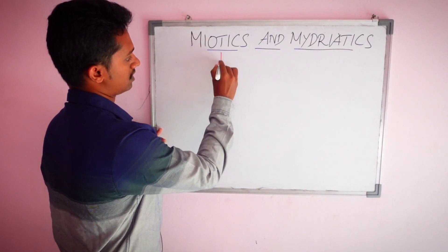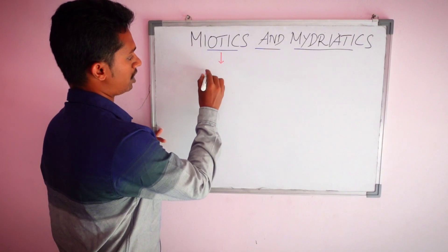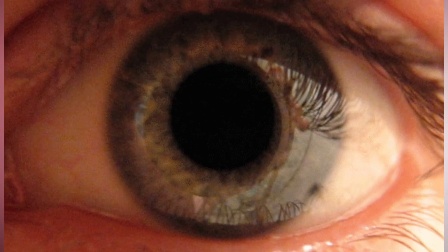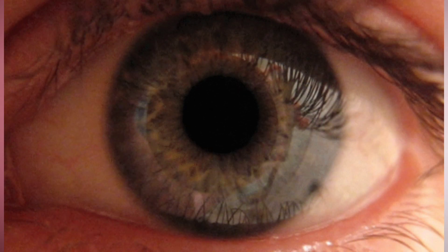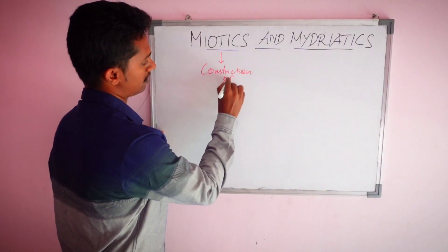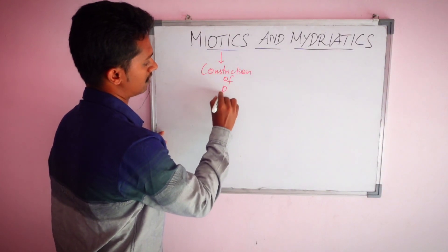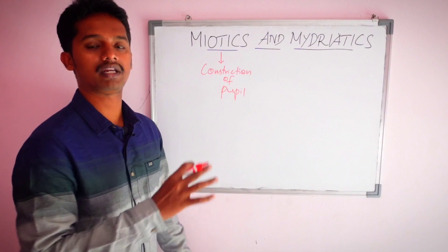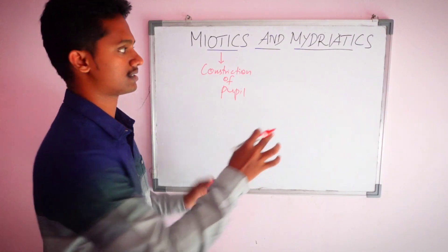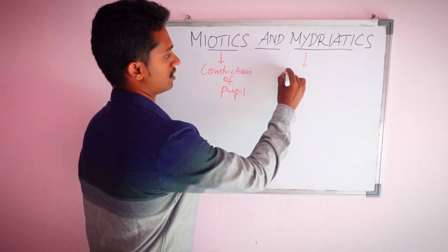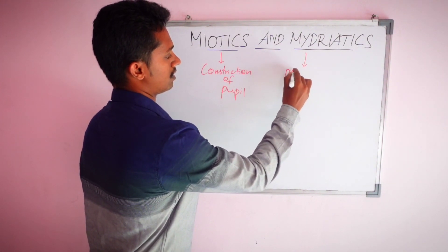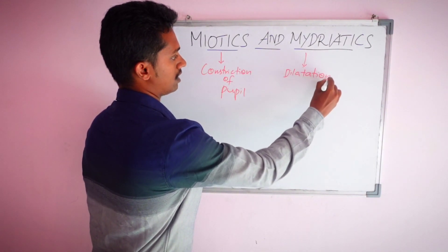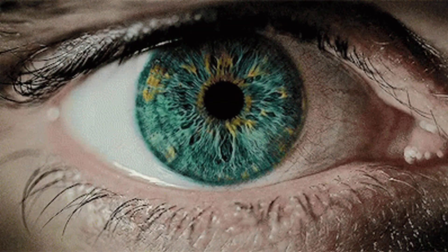Miotics are drugs that produce constriction of pupils. Mydriatics, the opposite, are drugs that produce dilation of pupils.